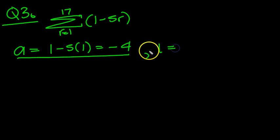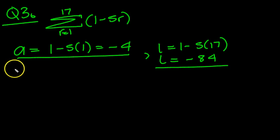The last term, l, put 17 in. You get 1 minus 5 times 17. 5 times 17 is 85. 1 minus 85 is minus 84. So l then is equal to minus 84.